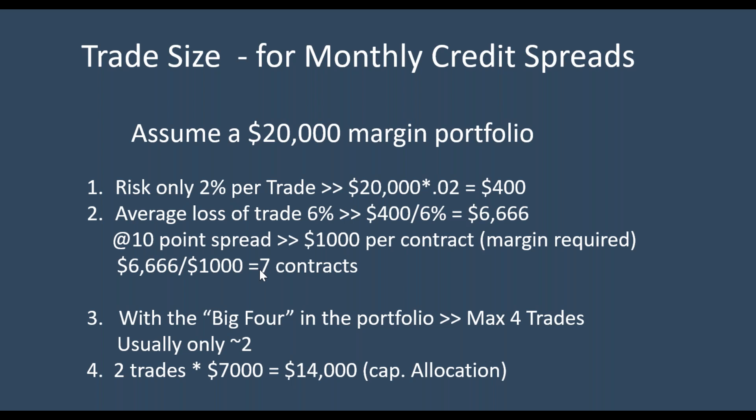For monthly credit spreads, I always look at the big four: Amazon, Google, RUT, and ESPX. The reason I use those big four is they are large in size and you can get very nice credits by only going out one month. The max I'm going to have is four trades, and usually it's only about two at a time. Two trades times $7,000 is $14,000 capital allocation, which is well within my $20,000 portfolio. Using these equations, you can determine the proper trade size, and that's going to alleviate one of the number one reasons why retail investors lose.